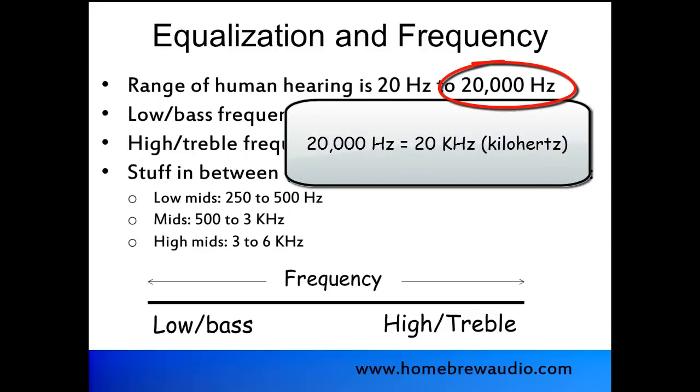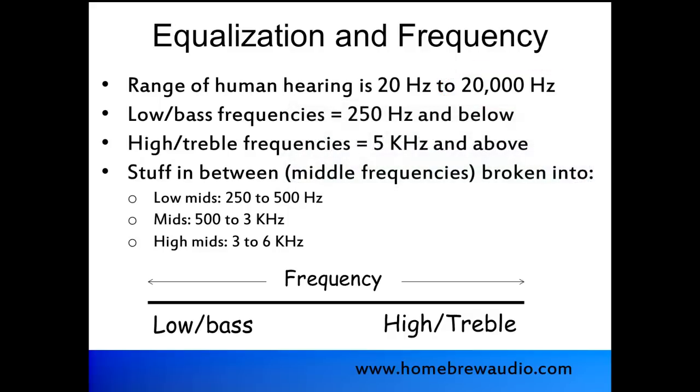So now we can apply those terms like low and deep and high and trebly to actual numbers. Typically, we consider the low or bass frequencies to be at 250 Hertz or below. And the high frequencies to be 5,000 Hertz, abbreviated as 5 kilohertz, or just 5KHZ, and above. And then there's the stuff in between.